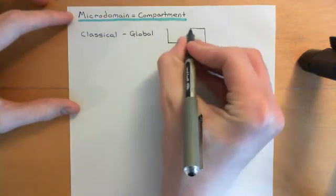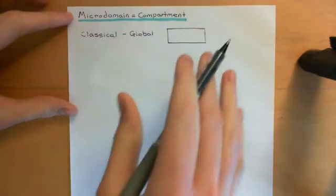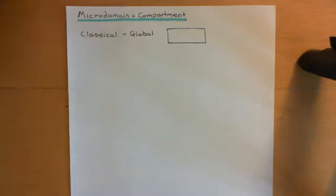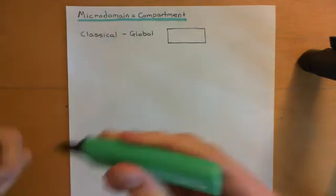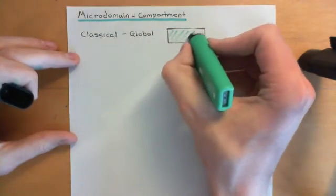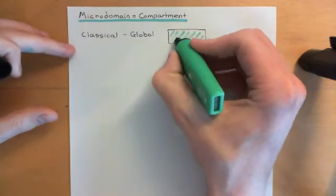If we have our cell here, and we stimulate some G-protein coupled receptor that's GS-coupled on the surface of our cell, this will obviously activate the GS cascade and then activate the adenylyl cyclase enzymes. The idea was that cyclic AMP would go up everywhere in the cytoplasm of the cell — the cyclic AMP signal was not localised at all.